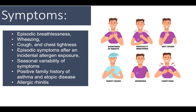Symptoms include episodic breathlessness and wheezing — the classic symptom — as well as cough and difficulty breathing following allergen exposure or exercise. Seasonal variability is important: asthma is typically worse in spring and summer. A positive family history of asthma should be sought, including first- and second-degree relatives and whether they present with allergic rhinitis. When a patient presents with shortness of breath and chest tightness, differential diagnoses such as congestive heart failure should be excluded before narrowing down to asthma based on occupational or allergic triggers.